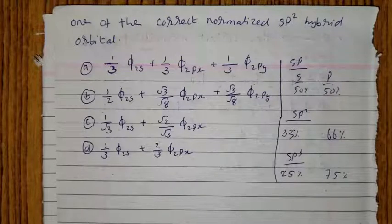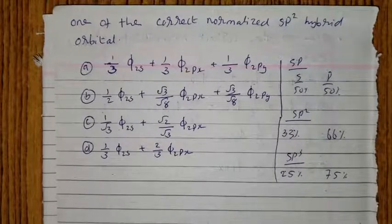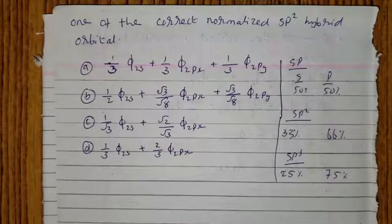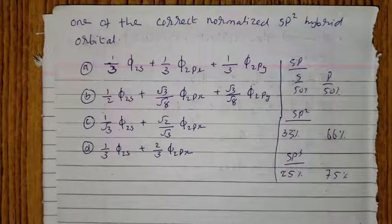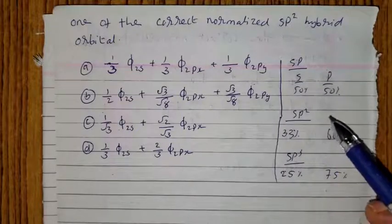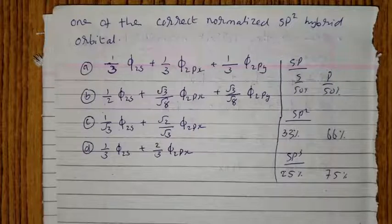It is a normalizer of sp² hybrid orbital with options A, B, C, D. How much percentage is S character, P character?